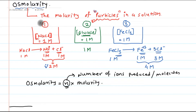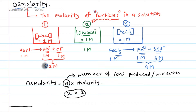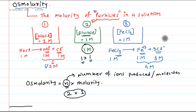The molarity was 1 in beaker 1, and the number of particles produced by sodium chloride is 2. So 2 × 1 gives osmolarity of 2. In the second case, osmolarity is 1 × 1 = 1, because glucose is non-dissociable so n = 1. In beaker 3, the number of ions produced per molecule is 4, so 4 × 1 gives osmolarity of 4.